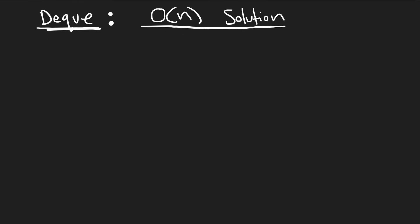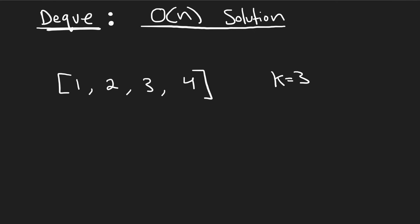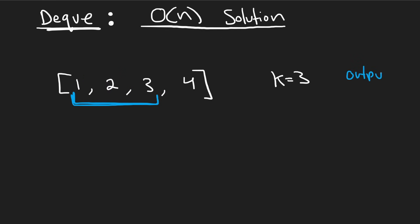I'm going to show you the best solution, but first notice this. Let's say this is our input array with four numbers and our window size k equals 3. Notice how these values are in increasing order: 1, 2, 3, 4. Now look at our first window — we have 1, 2, 3. We see 2 is greater than 1, and 3 is greater than 2. We scan through every element: 1 is not the max, 2 is not the max, 3 is the max. So in our output for the first value we put a 3.